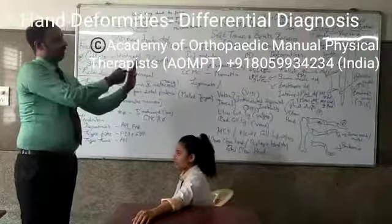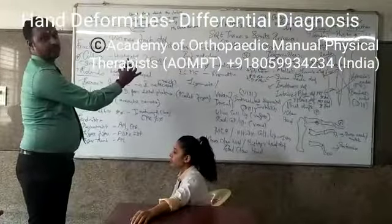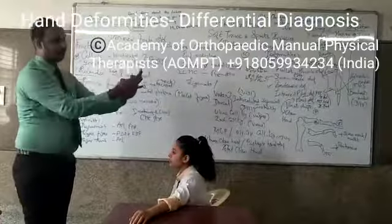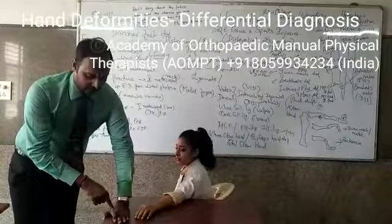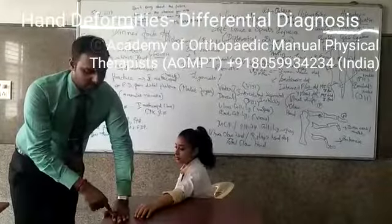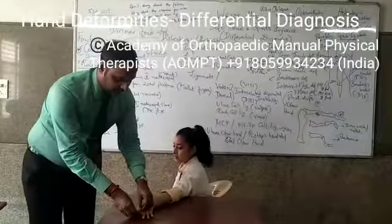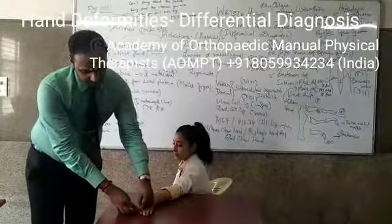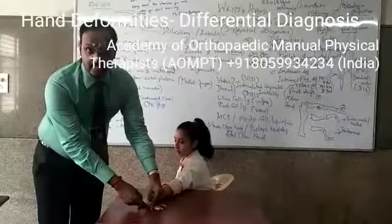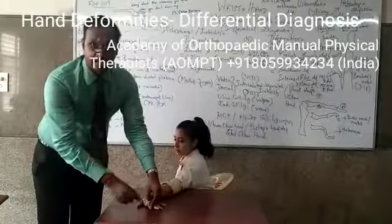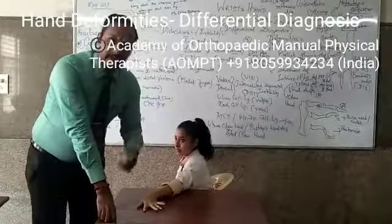The opposite of swan neck: you have extension at the MCP, PIP flexion, and DIP extension. The hand will appear with extended MCP, flexed PIP, and extended DIP. From the lateral view, MCP is extended, PIP is flexed, and DIP is extended. This is boutonnière deformity, which also happens in rheumatoid arthritis.